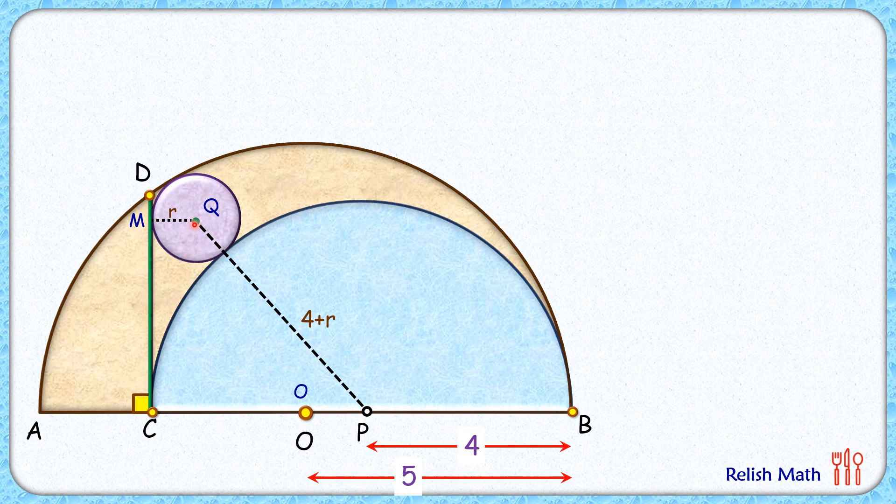From point Q let's drop a perpendicular on AB. Now here MQ length, that's r cm, so CE length will also be r cm. Full length CP, that's the radius of the blue circle or 4 cm, and thus EP length will be 4 minus r.